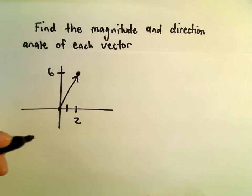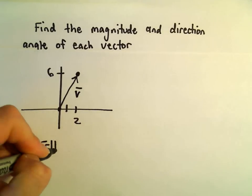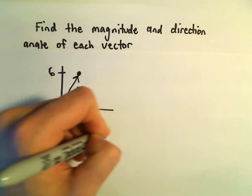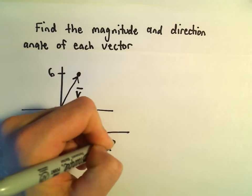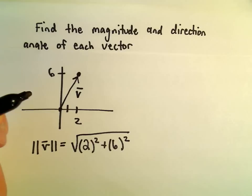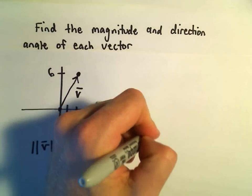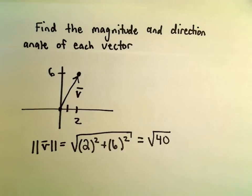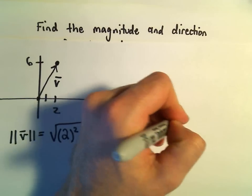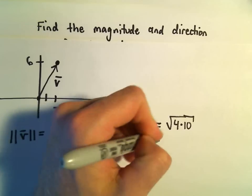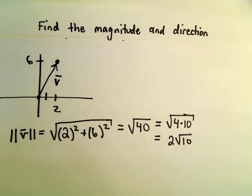So again, the magnitude, to get the magnitude, if we call this vector v, we just take each component, square it, add those together, and square root it. So we're going to get 36 plus 4, which is going to be the square root of 40. We can always write the square root of 40 as the square root of 4 times 10. And if we simplify that, that's going to give us 2 times the square root of 10 as our magnitude.